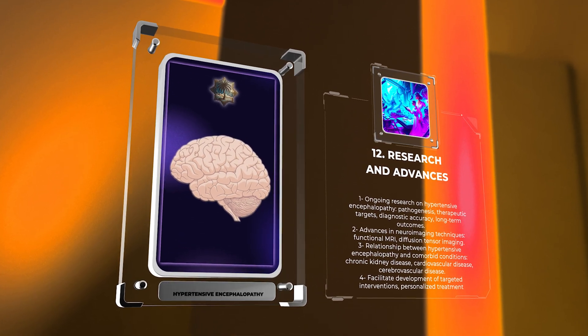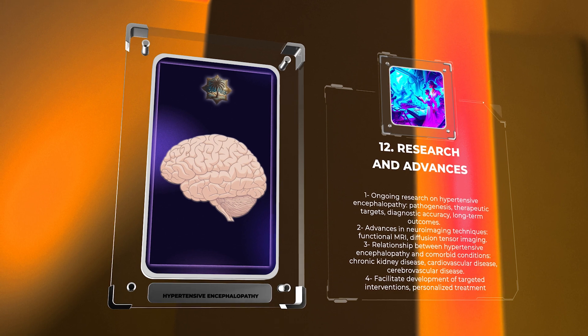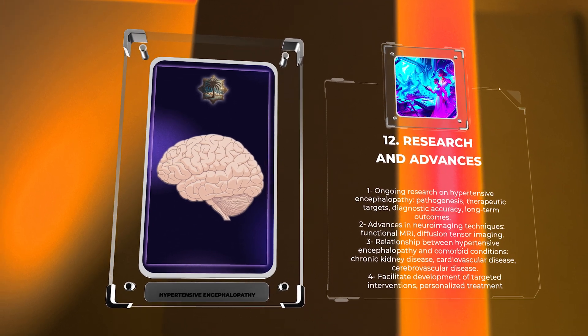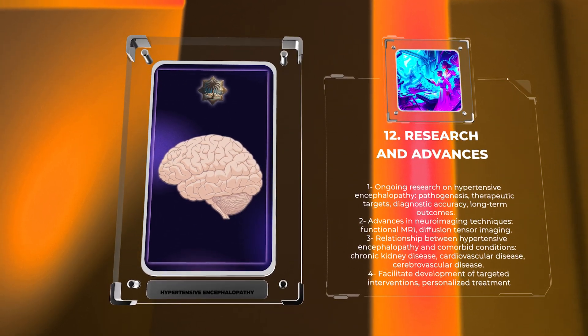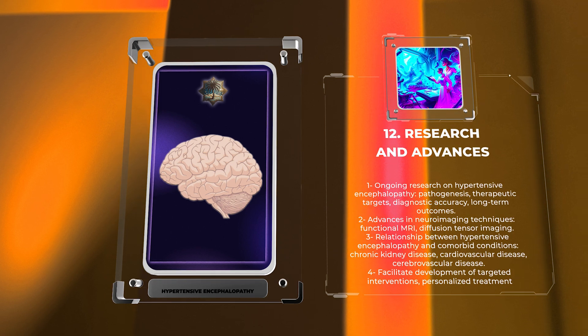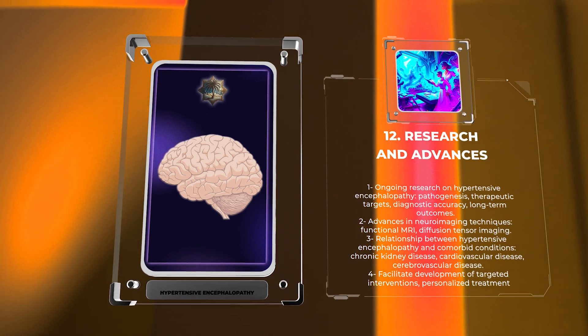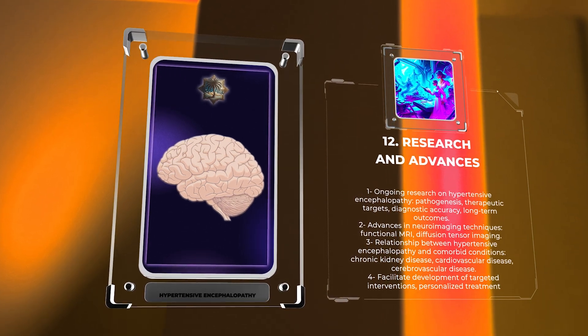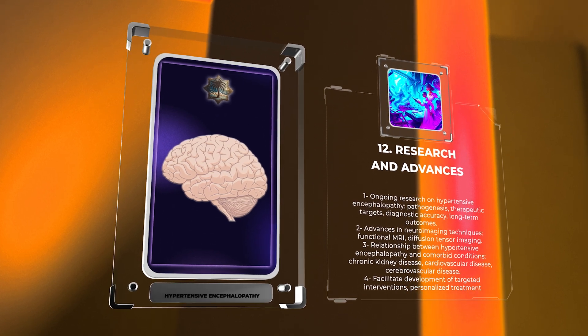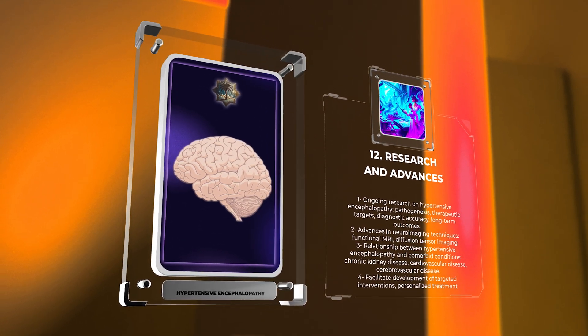Additionally, research efforts aim to improve the understanding of the relationship between hypertensive encephalopathy and other comorbid conditions, such as chronic kidney disease, cardiovascular disease, and cerebrovascular disease. These investigations may facilitate the development of targeted interventions and personalized treatment approaches in the future.